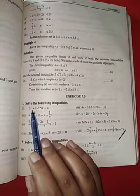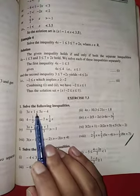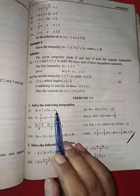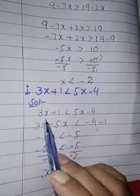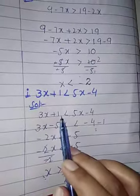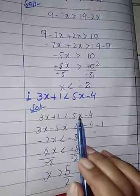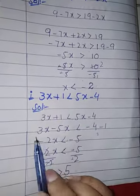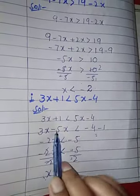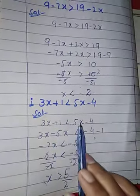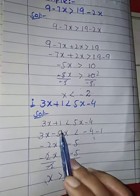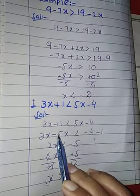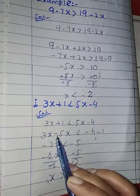The first one is 3x plus 1 less than 5x minus 4. Now we are solving the question: 3x plus 1 less than 5x minus 4. When 5x comes to this side of the inequality the sign changes, so we write minus sign.